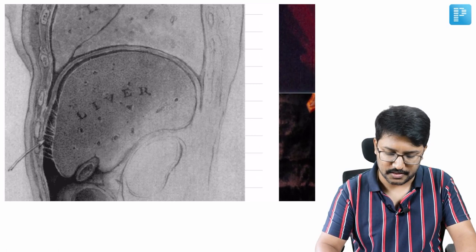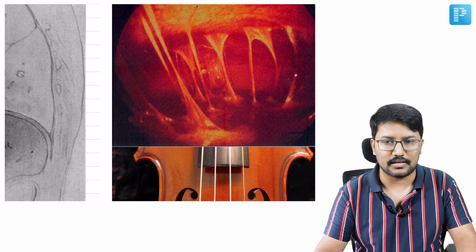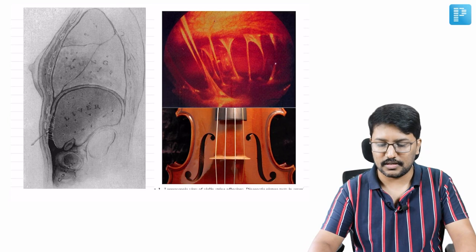Look at this image - these are the adhesions at the liver capsule, with liver parenchyma unaffected, showing exudation and development of adhesions. When seen through the laparoscope, you can see the surface of the liver with surrounding structures developing adhesions which look like the strings of a violin.